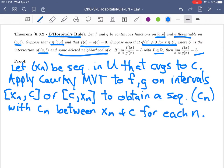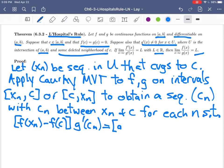such that [f(x_n) - f(c)] · g'(c_n) = [g(x_n) - g(c)] · f'(c_n).